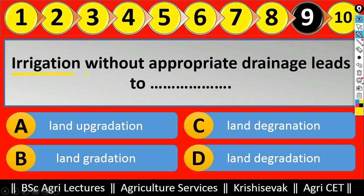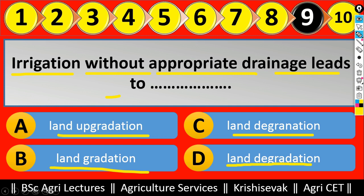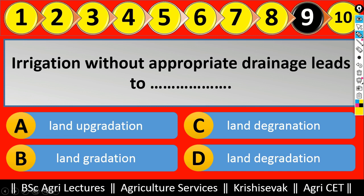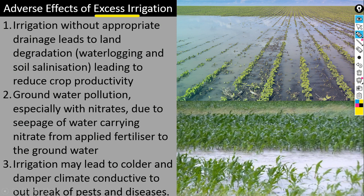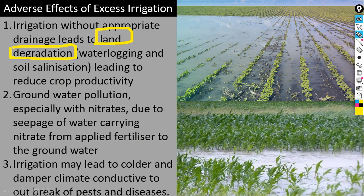Question number nine: 'Irrigation without appropriate drainage leads to ______.' Options are: A) land upgradation, B) land gradation, C) land degradation, and D) land degradation. The right answer is land degradation. Irrigation without appropriate drainage leads to land degradation, causing waterlogging conditions and soil salinization, which reduces crop productivity.